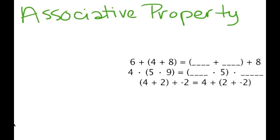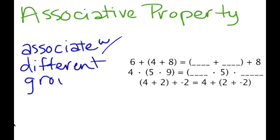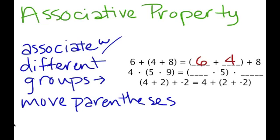The next property is the associative property. With the associative property, you can associate with different groups. Think about you and your friends — you associate with different groups of people, maybe one group in first period or another group at the lunch table. You can also think of this as moving the parentheses. Here, 6 plus the quantity of 4 plus 8 — we can change it and put 6 and 4 together in parentheses to make 10, then add the 8 afterwards.